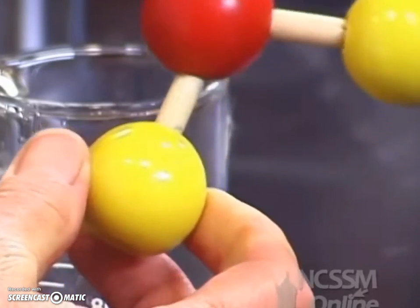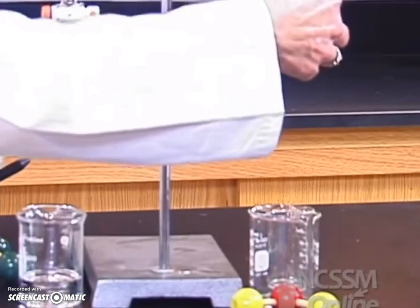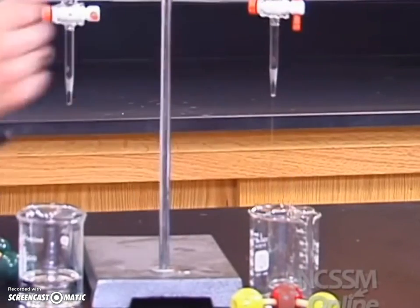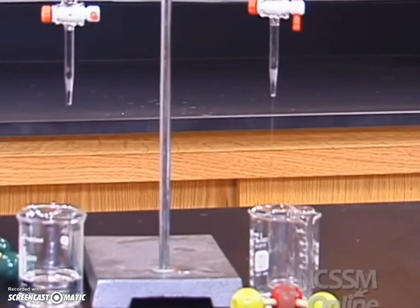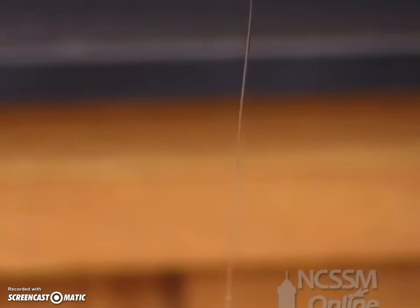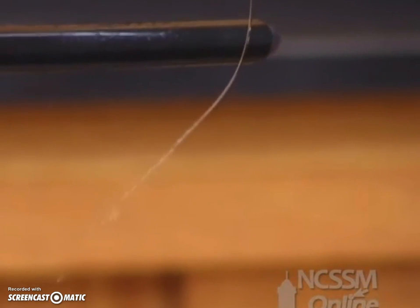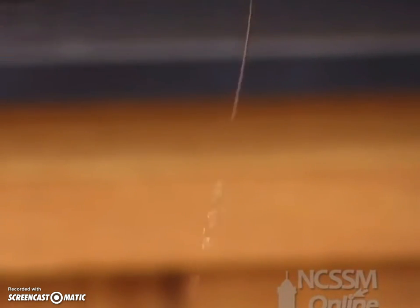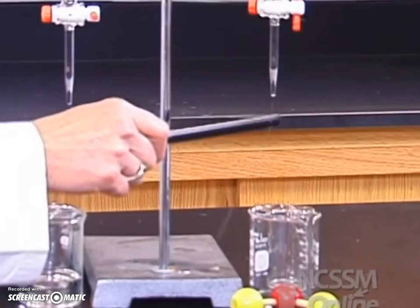We're going to take a charged rod, place it beside the stream of water, and see what happens. Notice it's bending. The behavior of the molecule is very different, and it's the shape of the molecule that allows it to behave in a different way.